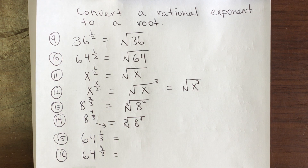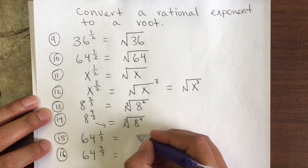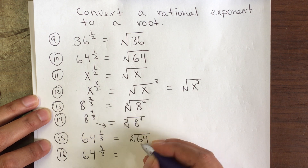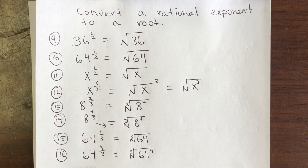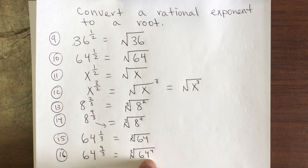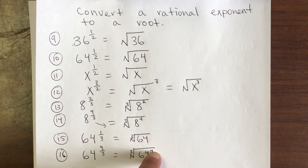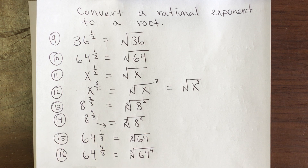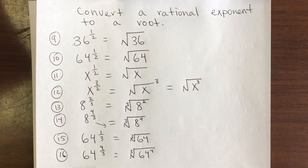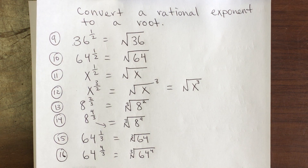Pause the video and try those before seeing the answers. The base always stays the same whether you're going from a rational exponent to a root or from a root to a rational exponent. The exponent becomes the numerator and the index becomes the denominator — or vice versa going the other direction. With this, you are able to work on assignment 8.5.